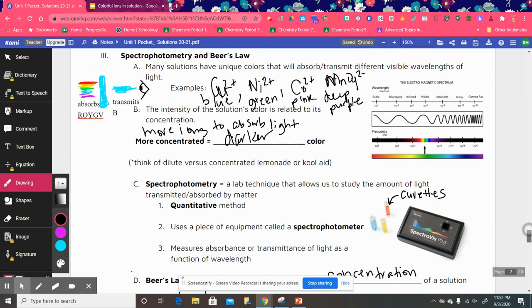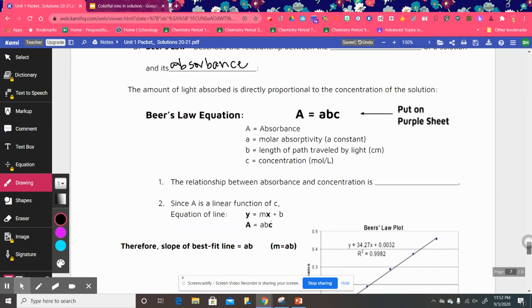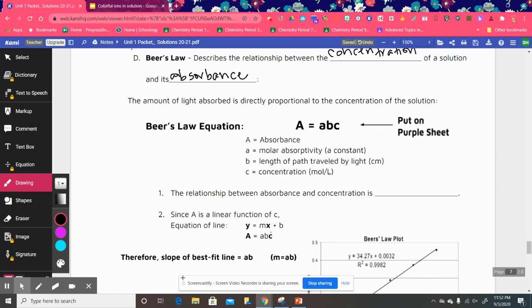The amount of light that is absorbed is directly proportional to the concentration of the solution. So go ahead and put this formula on your purple sheet. That big A is for absorbance. The lowercase a is for molar absorptivity. This is a constant value.